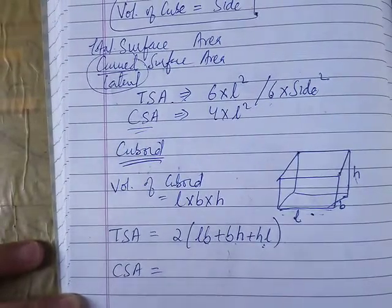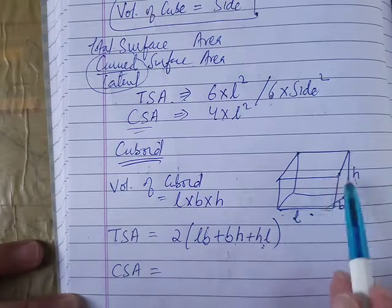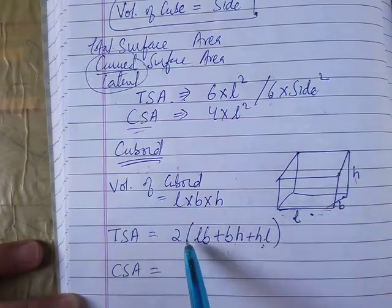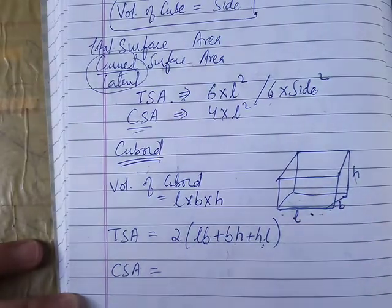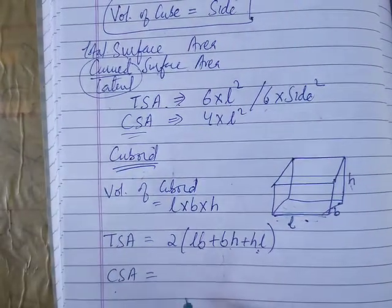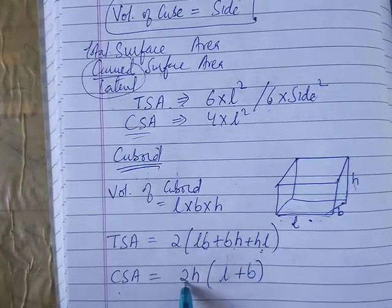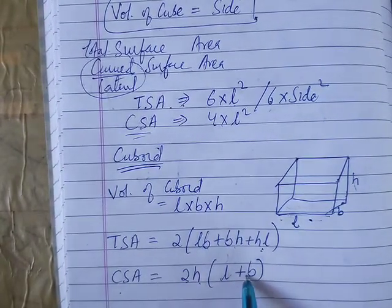This is the curved surface area. The curved surface area is 2 times height times length plus breadth.